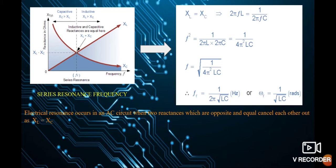In the given graph, the Y-axis represents reactance in ohms and the X-axis represents frequency. According to the relation for XL, since XL equals 2 pi F into L, it is directly proportional to frequency — so as frequency increases, XL increases, giving an increasing straight line from the origin. For XC, since XC equals 1 by 2 pi F into C, as frequency increases XC decreases, giving a hyperbolic curve — highest at zero frequency and lowest at high frequency.